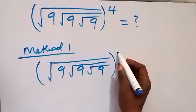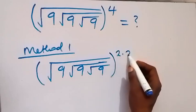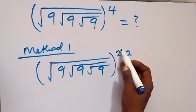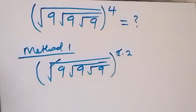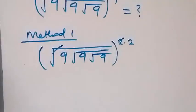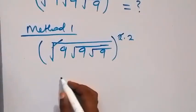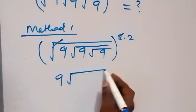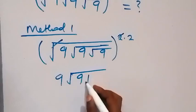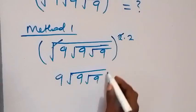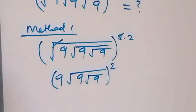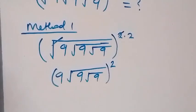The 4 here can be written as 2 times 2. So this first power of 2 we cancel with the square root outside here, and from there this will become 9, then square root of 9, square root of 9, then we raise to the power 2 that is left. From here we can simplify what is in the bracket.